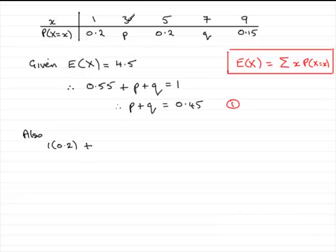Then we've got plus the observed value here, 3 times P, 3P. And if we continue this on we're going to have 5 times 0.2 plus 7 times Q, that's 7Q, plus 9 times 0.15 and that is going to equal E(X) which is 4.5.